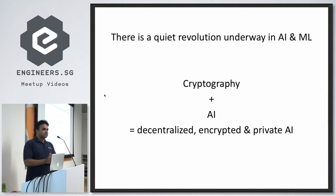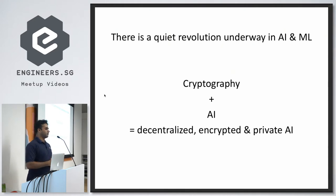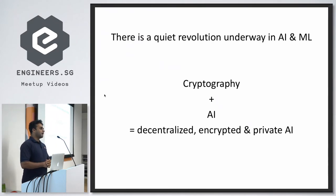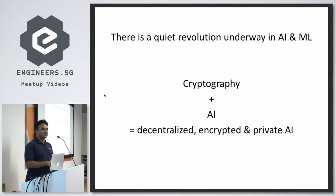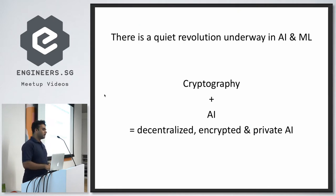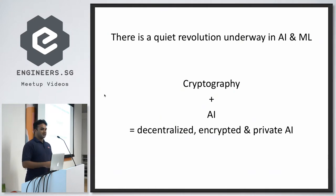The reason I'm talking about this is that, as we speak, there is a quiet revolution underway in AI and machine learning. The revolution is really happening because of the marriage of cryptography and AI. By combining these concepts, it's now becoming possible to build much more decentralized, encrypted, and privacy-preserving machine learning systems.